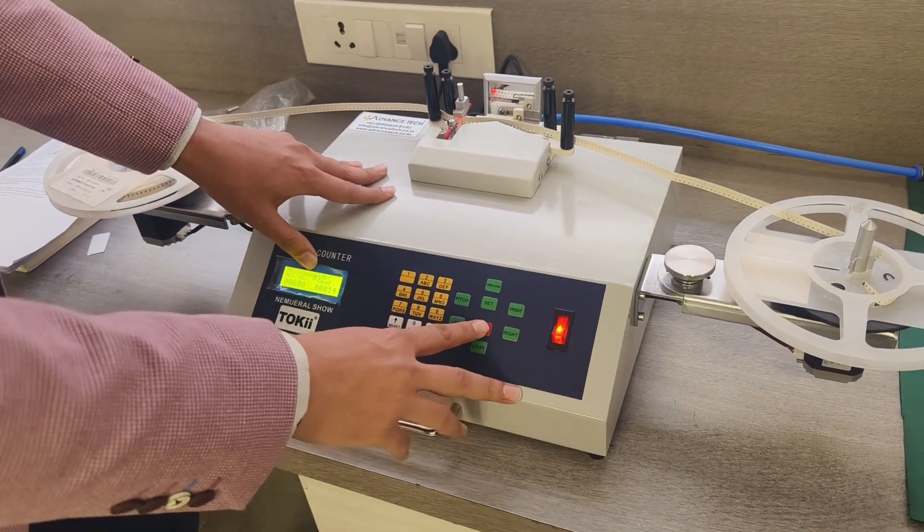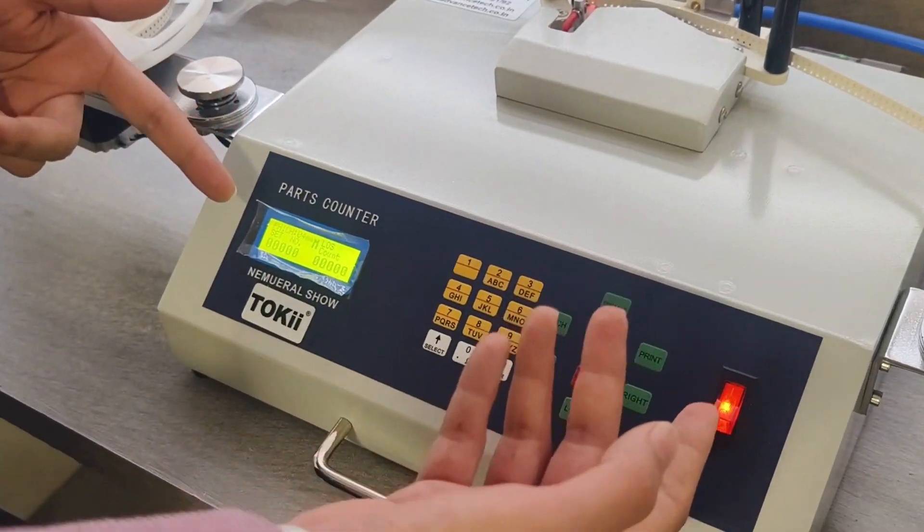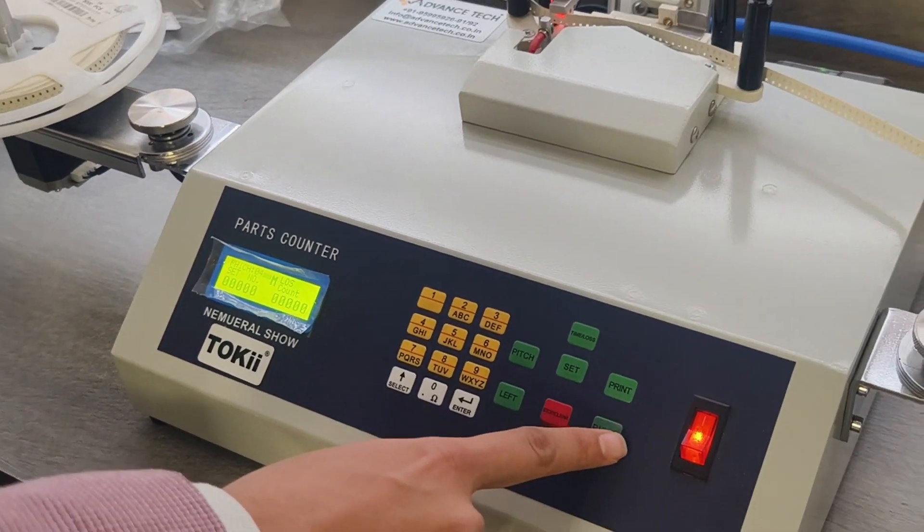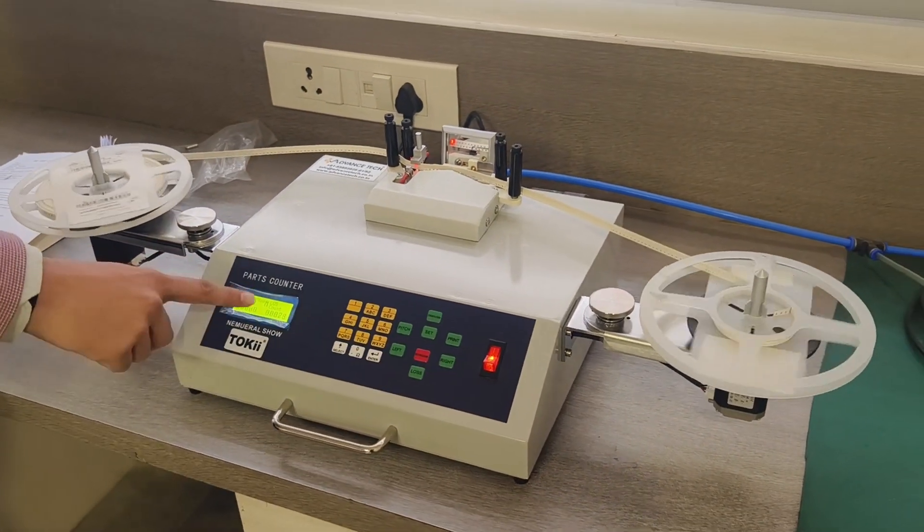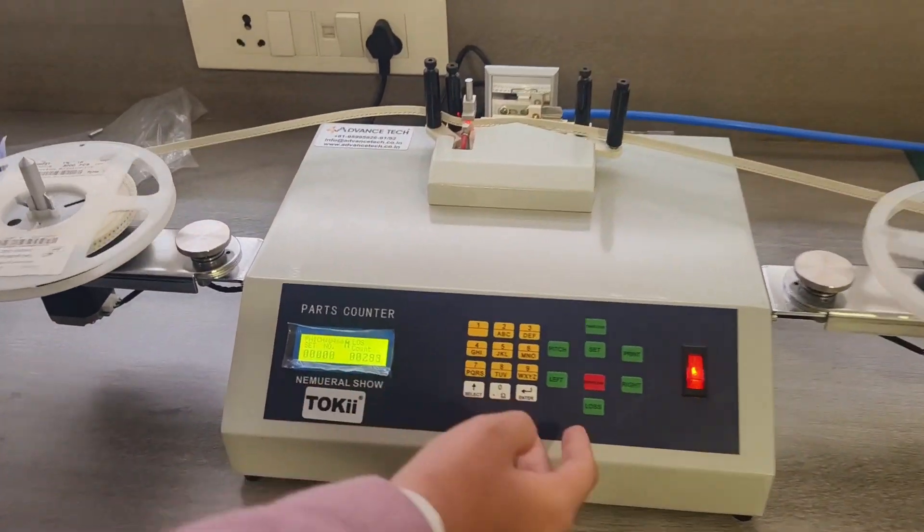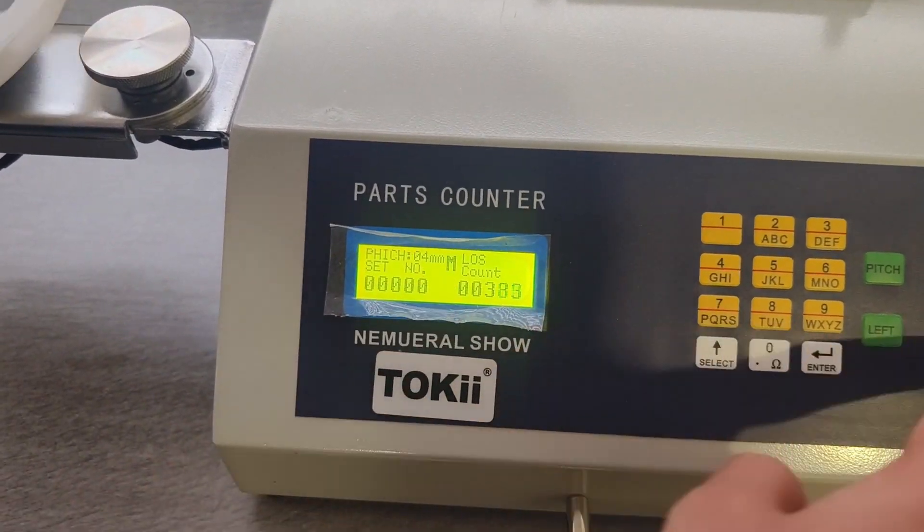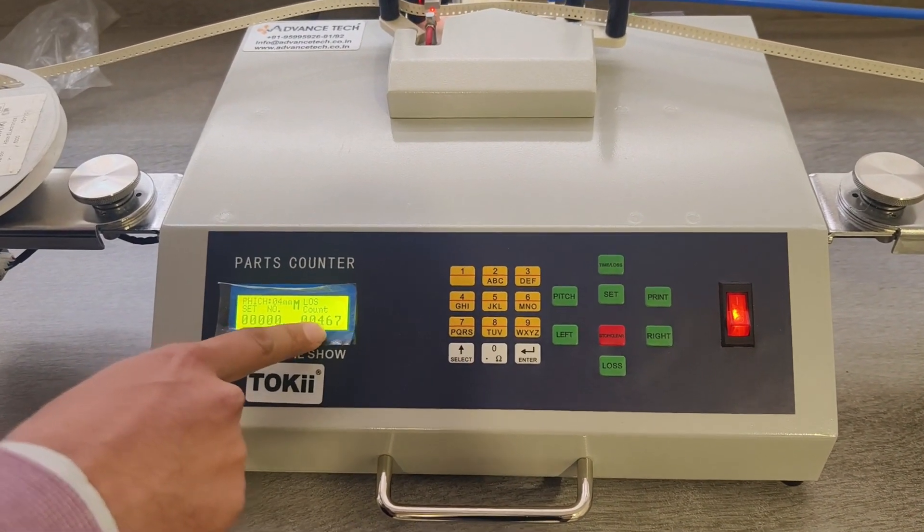So here is a count. You can clear this count. I made it zero and now I will start it again. As you can see, it is counting automatically and here it is on manual mode. As soon as I press the stop button, it will stop and give you the count.